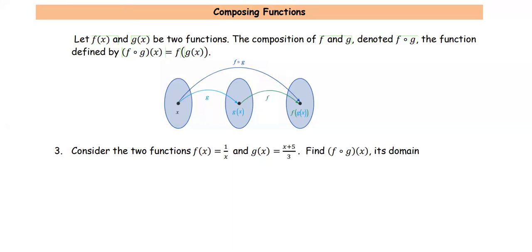Composing functions. Let f(x) and g(x) be two functions. The composition of f and g, denoted f of g, is the function defined by f(g(x)), which is f of the input g(x).